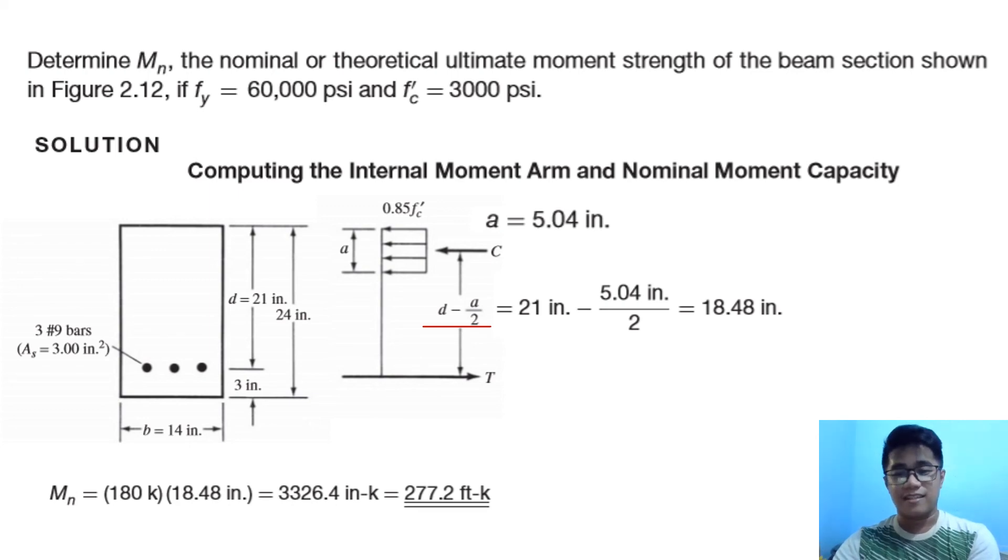So it's quite easy, right? All you have to do is find the value of your a by equating the compression and the tension. By that, you can get the moment arm, and using that moment arm, you can already solve the nominal moment.